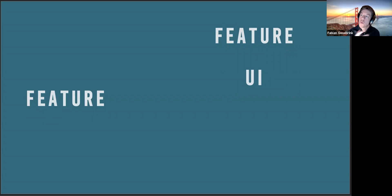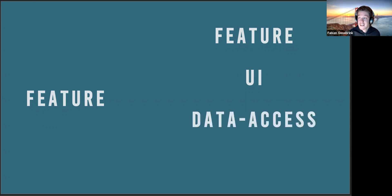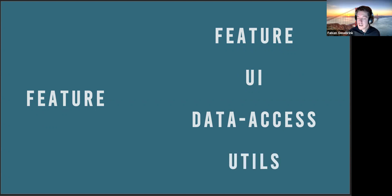The UI library holds all the presentational components for that feature - components with input parameters where we just pass data in and they handle display, not where the data comes from. We also have a data-access library (talking to external REST APIs and getting data) and a utils library for utilities shared across that feature. These four libraries together display one feature in an NX monorepo.